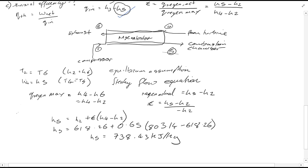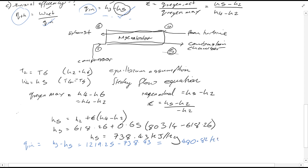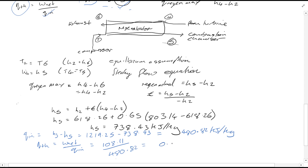Now we know H5, so we can calculate Q_in and then the thermal efficiency. Plugging values into Q_in gives us that result, and since we know Q_in, the thermal efficiency eta_th is equal to 0.2248, or 22.48%.